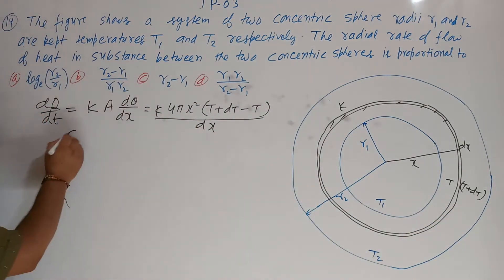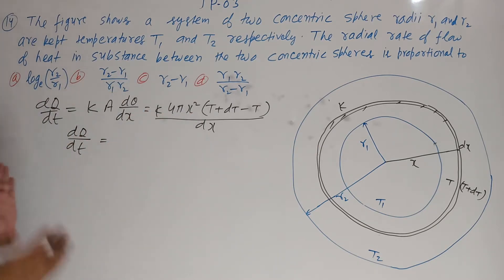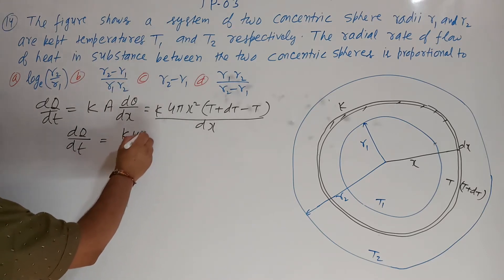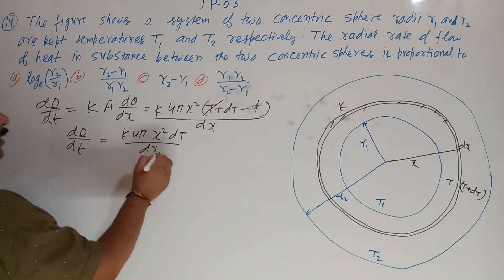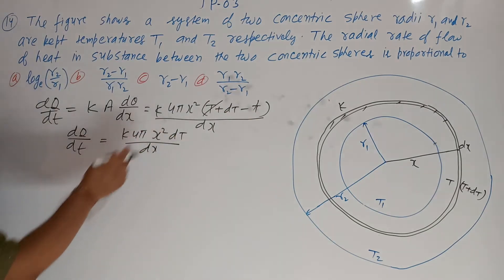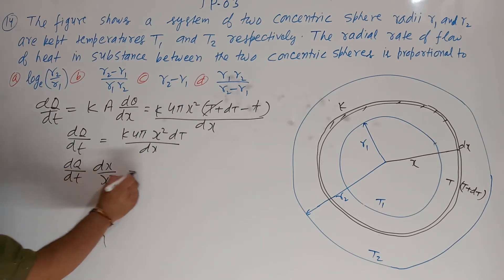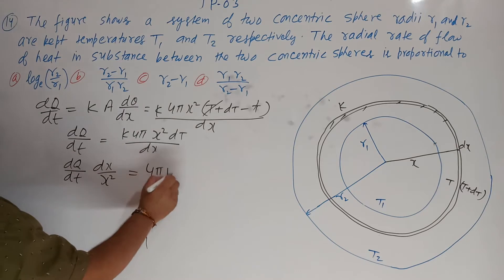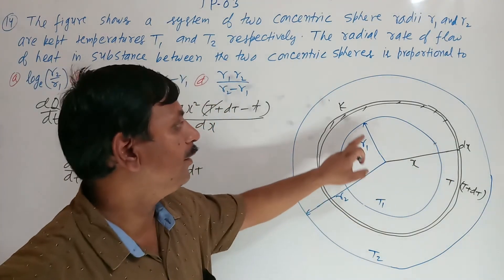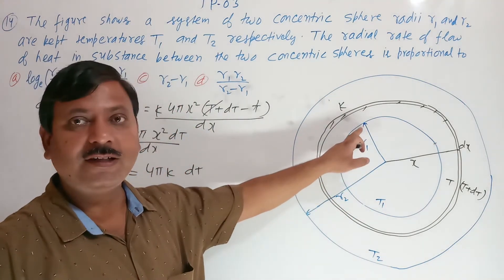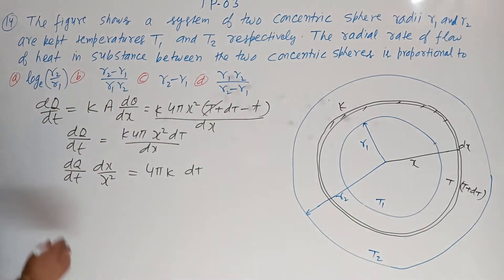Rearranging: DX upon X² equals 4πK times DT. Here X varies from R1 to R2 (inner surface radius R1, outer is R2), and temperature varies from T1 to T2. We integrate this expression.